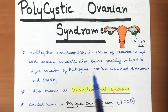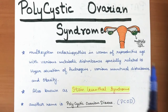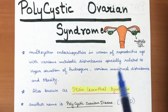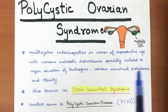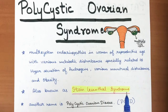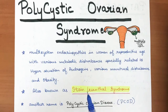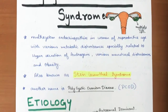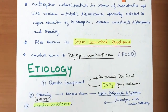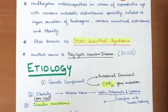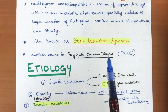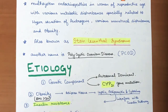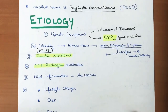It is related to various hypersecretion of androgens, menstrual disturbances such as amenorrhea and oligomenorrhea, and obesity-related factors. It is also known as Stein-Leventhal syndrome, named after the doctor who discovered it. Another common name seen in examination and MCQ questions is PCOD — polycystic ovarian disease.